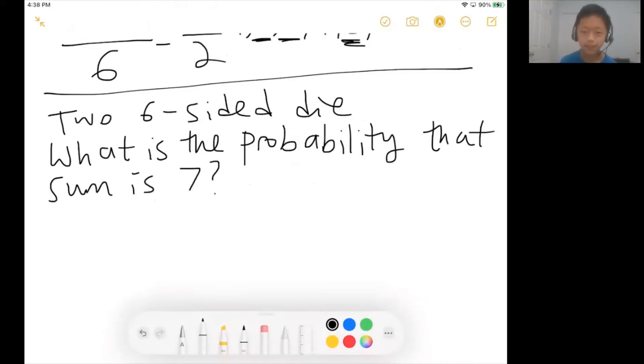So basically, we're going to roll these two dice. And then we take the two numbers on these two dice and we're going to add those two numbers together. And we want to know what is the probability that the two numbers that we get sum to seven.